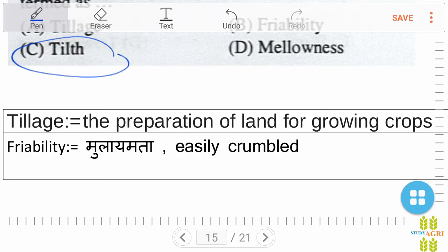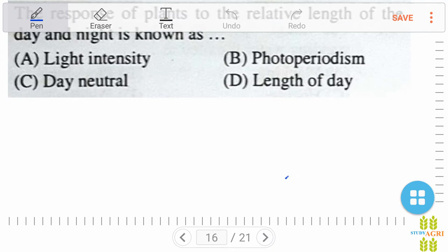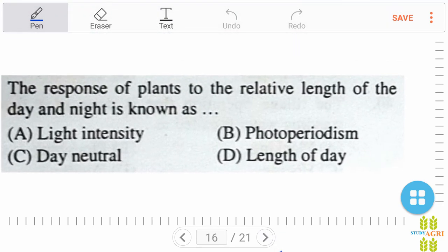Next question: the response of plants to the relative length of day and night is known as option B, photoperiodism. The response of plants to the relative length of day and night is known as photoperiodism.